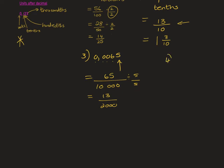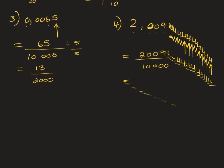For number four, you have been given 2.0094. Again, look where you are landing up: units, tenths, hundredths, thousandths — so we add ten-thousandths. Write all your numbers over ten thousand and take the decimal away. Now find numbers that fit into both top and bottom.